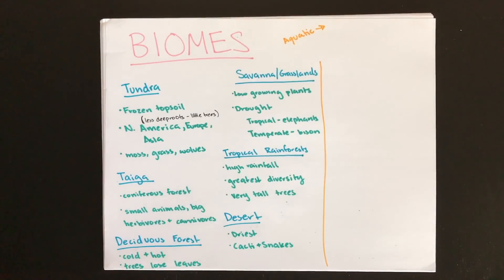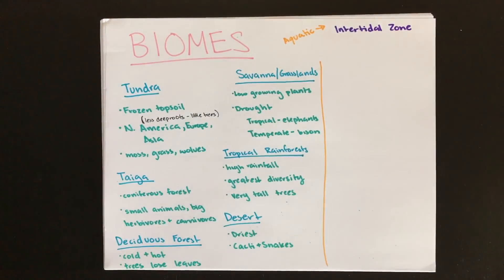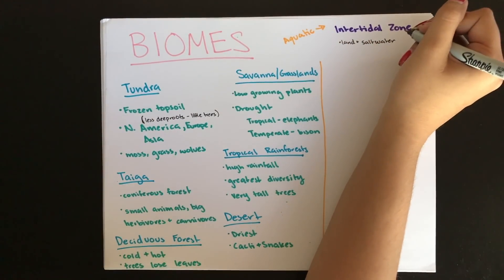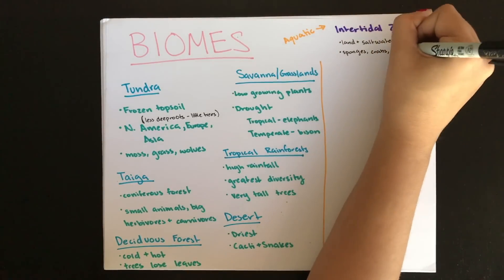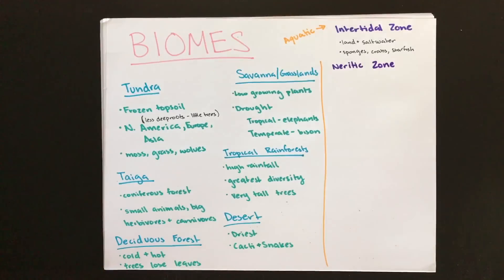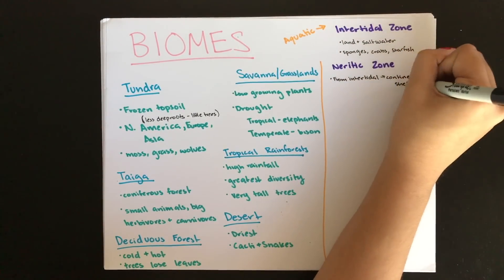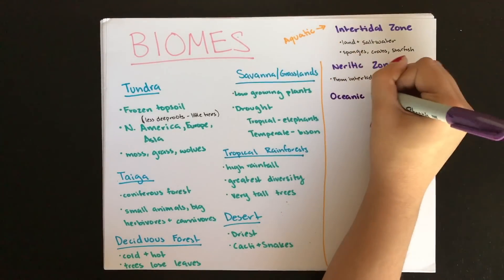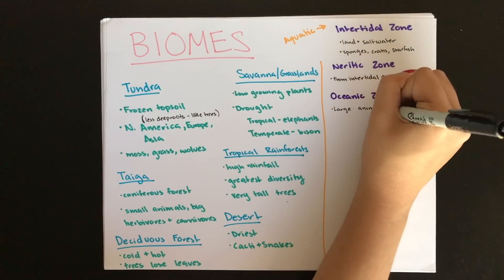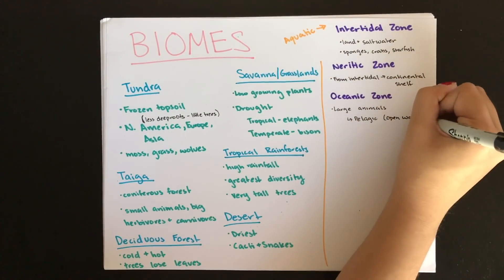Now for aquatic biomes. The intertidal zone is where land and salt water meet, with alternating periods of dryness and complete submergence based on tides. Organisms include sponges, crabs, and starfish. The neritic zone extends from the intertidal zone to the edge of the continental shelf and includes sea urchins, seaweed, and fish. The oceanic zone is essentially open ocean, with many large free-swimming animals that feed on one another. It can be divided into the pelagic (open water) and the benthic (ocean bottom).